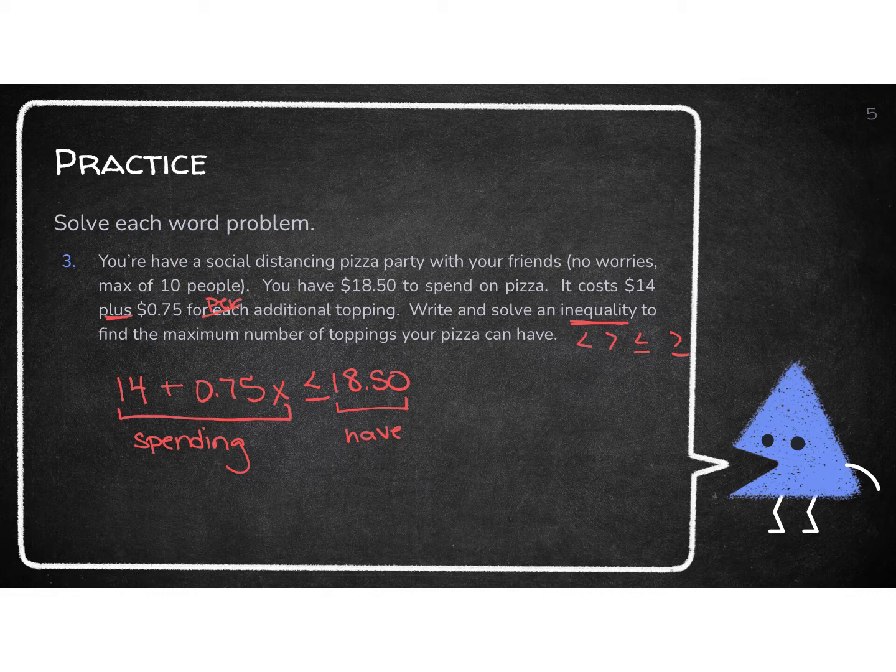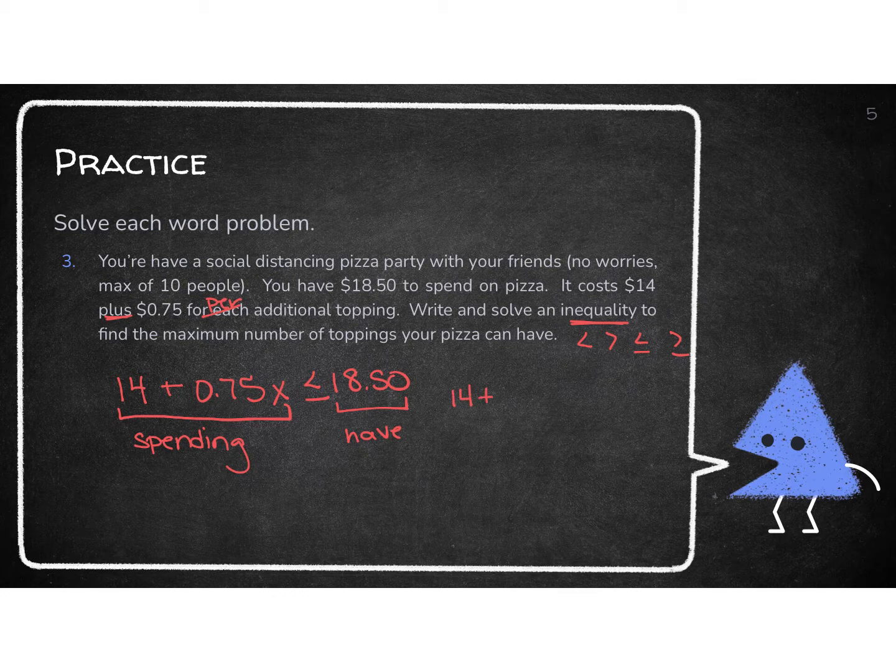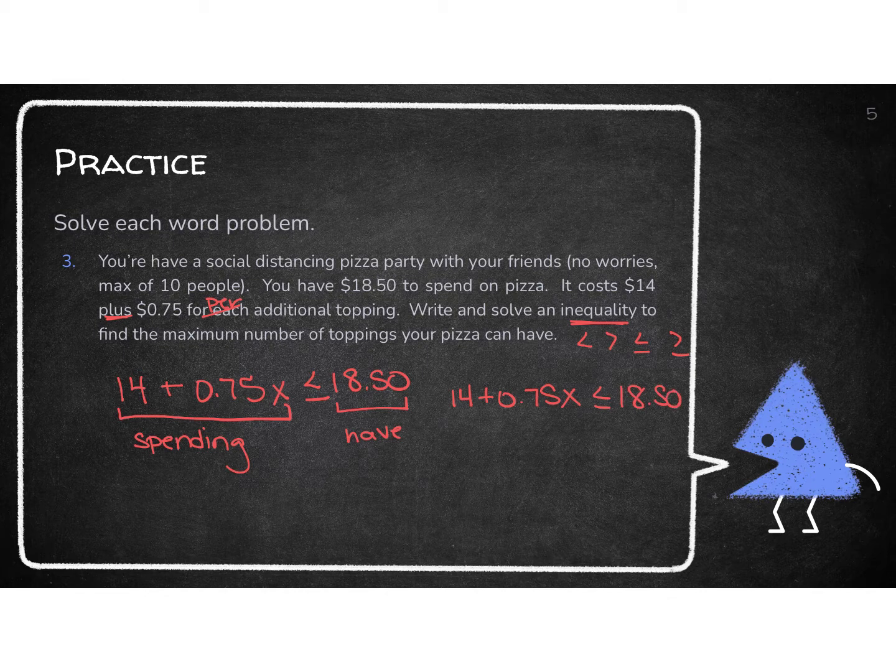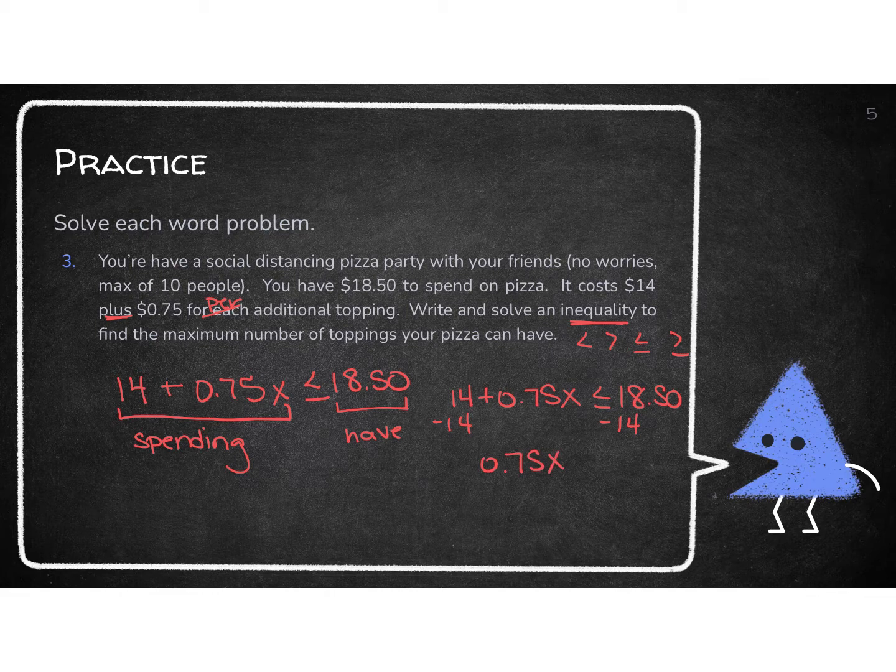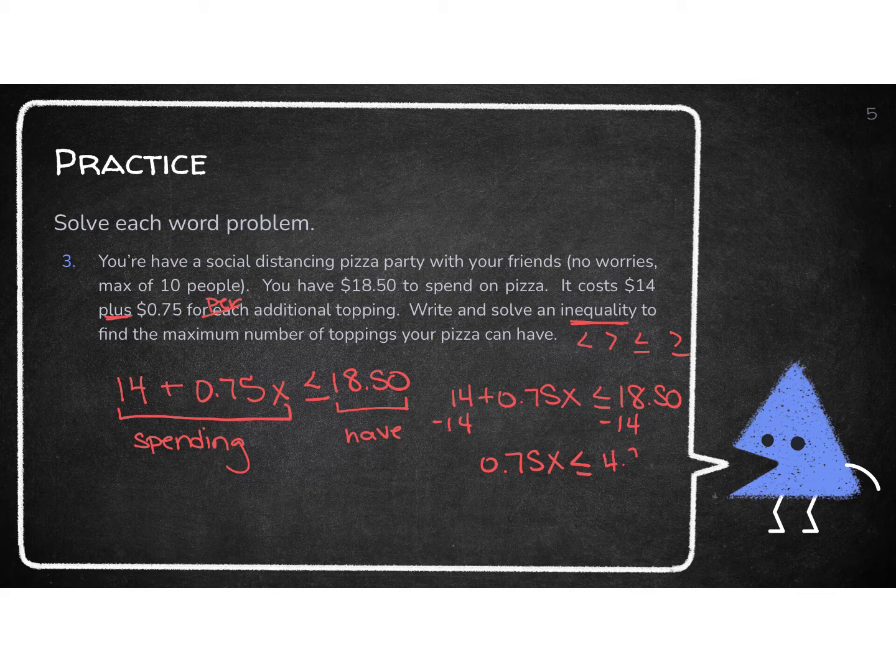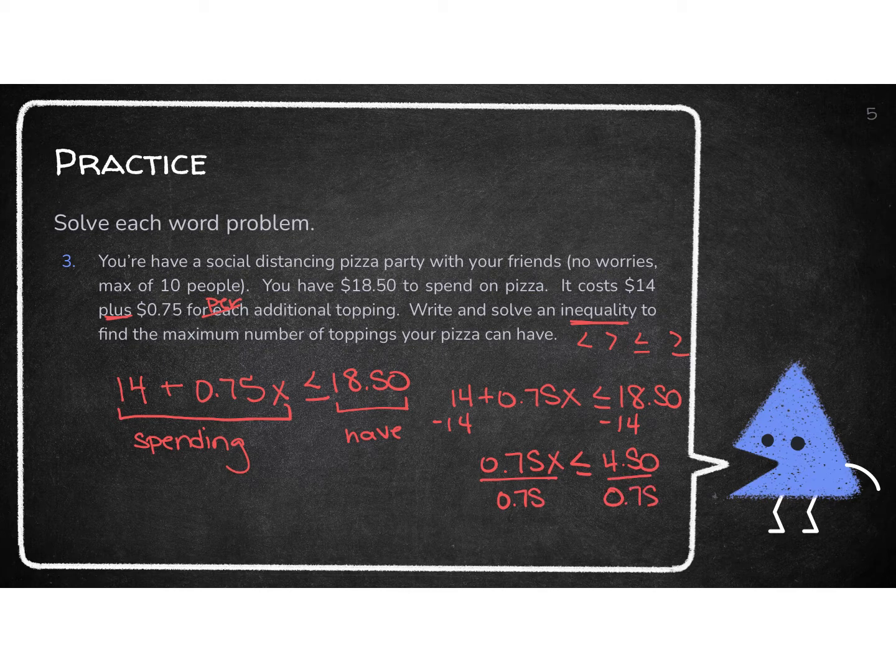So we're going to go ahead and we're going to solve this now. So I'm going to do 14 plus 0.75X has to be less than or equal to $18.50. So we're going to get rid of whatever's adding or subtracting. So I get 0.75X is less than or equal to 4.50. And then we're going to divide by 0.75. So X has to be less than or equal to 6.